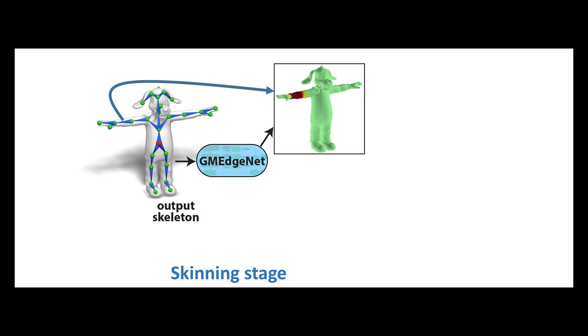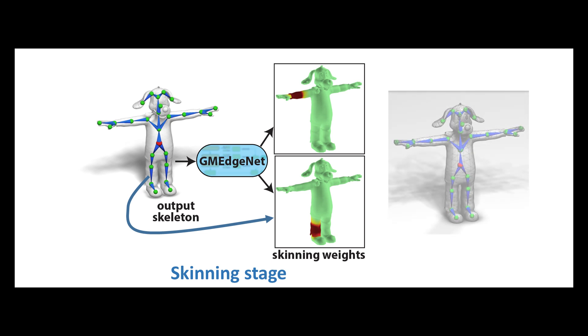Using this extracted skeleton, the third and last stage of our method is to produce skinning weights based on a graph neural network similar to the one used in the initial joint prediction stage. Given the predicted skinning and skeleton, the character is now animation ready.